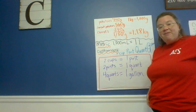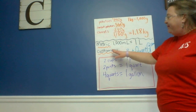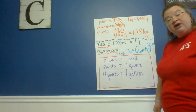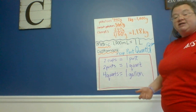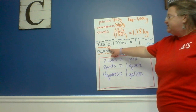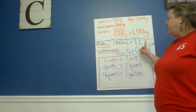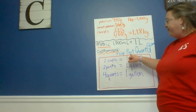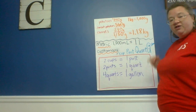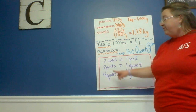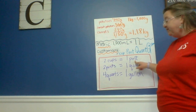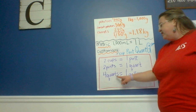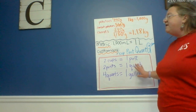Now I want to show you the chart I have here. For the metric system, one thousand milliliters equals one liter. For the customary system, drawn from smallest to largest: two cups equals one pint, two pints equals one quart, and four quarts equals one gallon. You might want to pause the video and write this down in a journal so you have it to help you remember.